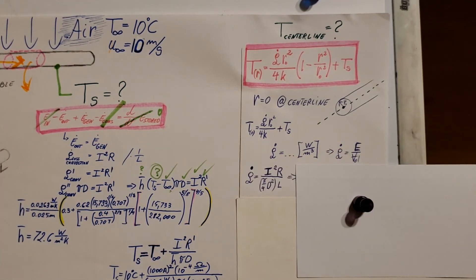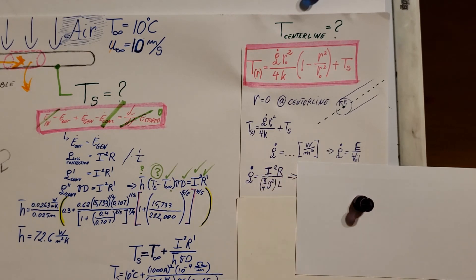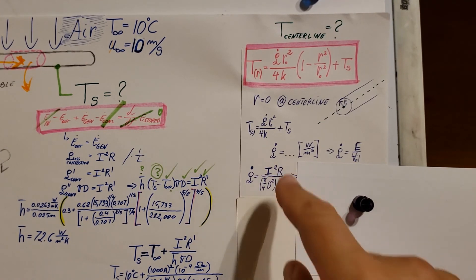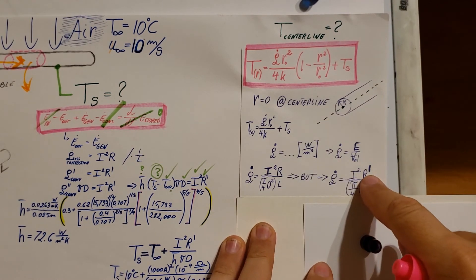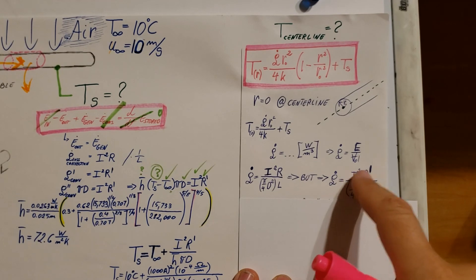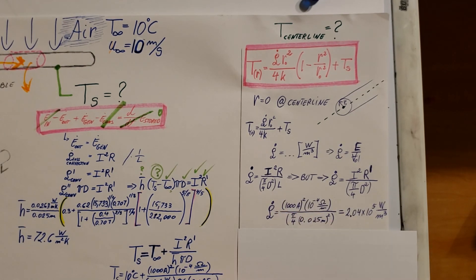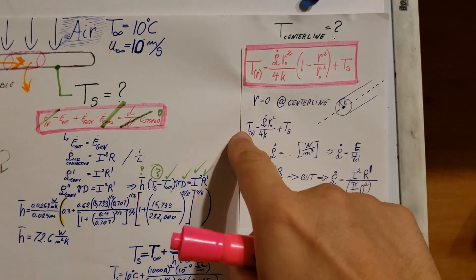The electrical energy is I squared R, and the volume is the volume of the cylinder. Since we only have R-prime (resistance per length), we divide both numerator and denominator by length: I squared R-prime in the numerator, and the cross-sectional area in the denominator (the length cancels). Plugging everything in gives a volumetric heat generation of 2.04 times 10 to the fifth watts per meter cubed.